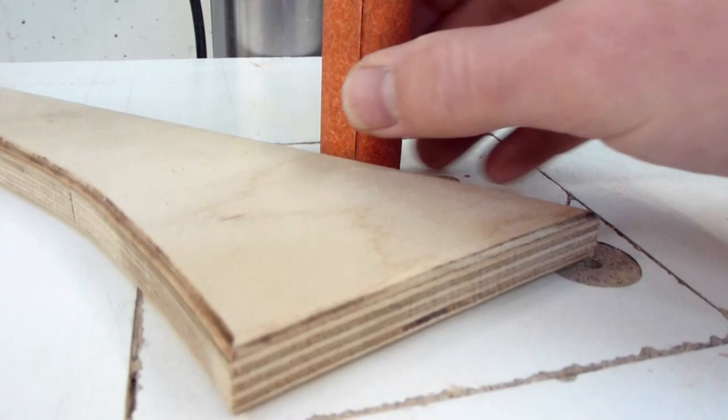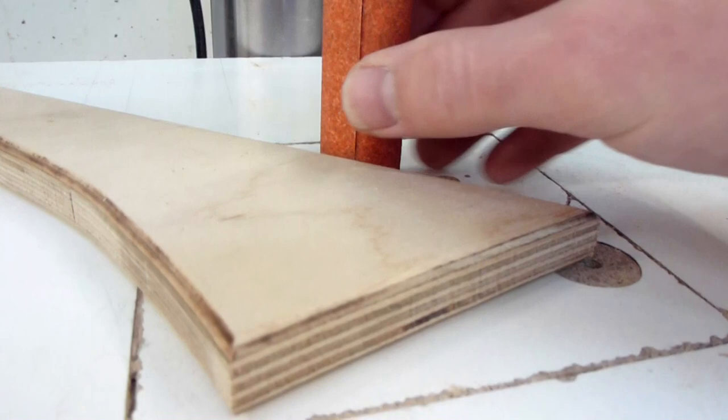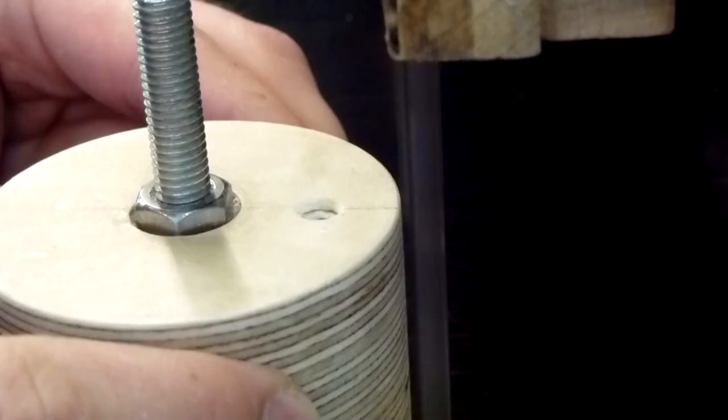For the other two I used a method that I picked up in this video. I drill a hole through the whole spindle and then cut a slot up to that hole.